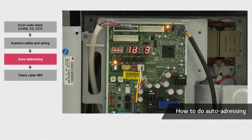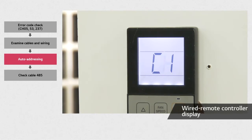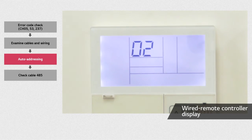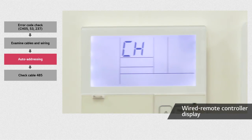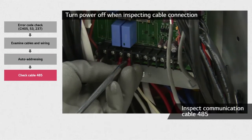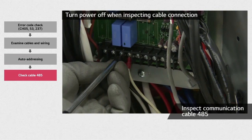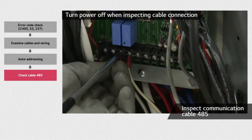Compare this number with the number of installed indoor units. Once the auto-addressing setting has been completed, you can check that the indoor unit addresses 01, 02, and 03 are displayed on each remote control. Check if the 485 communication cable terminal screw is properly tightened to the indoor unit.